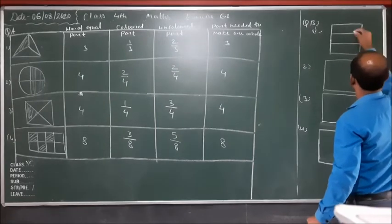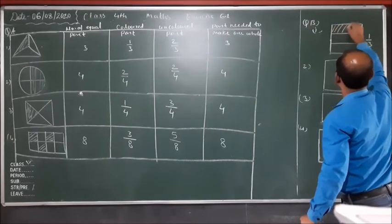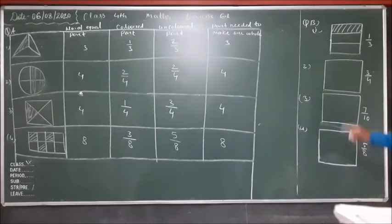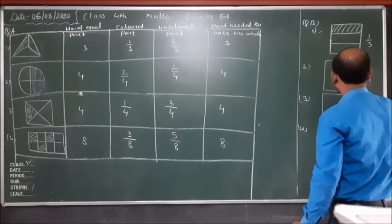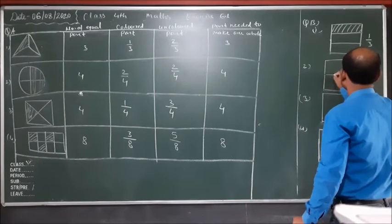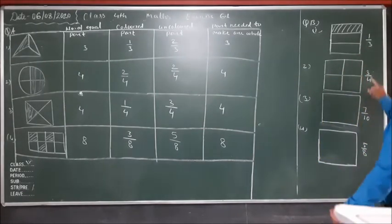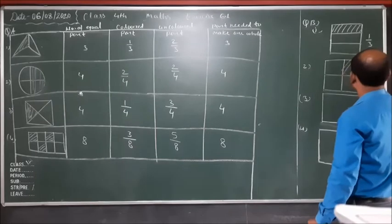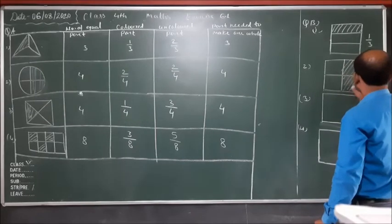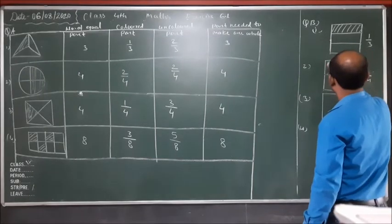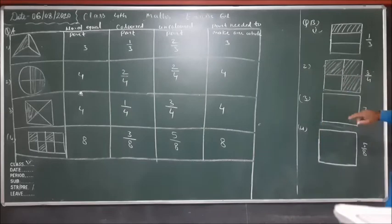For one upon three: we divide the square into three parts and color one part. This represents one upon three. For three upon four: we divide into four equal parts and three upon four means three parts should be colored, so we color three parts.